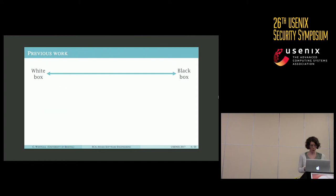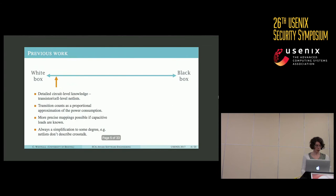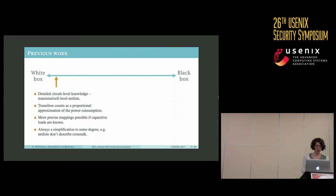We're not the first to pursue such an idea. Existing proposals for simulating side channels mostly fall somewhere along a spectrum between what we call white box and what we call black box modeling. White box modeling relies on the type of detailed circuit-level knowledge that can be found in transistor or cell-level net lists. This information is used to simulate the transitions occurring in a circuit, and simple transition counts can themselves be used to give a proportional approximation of the power consumption. Or alternatively, if the capacitive loads of the cell outputs are also known, the transitions can be mapped more precisely to a power trace prediction.